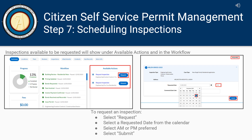Now that the permit has been issued, you can begin scheduling inspections. The inspections available to be requested will show under the available actions and in the workflow. To request an inspection, select Request, a date, AM or PM, and click Submit.